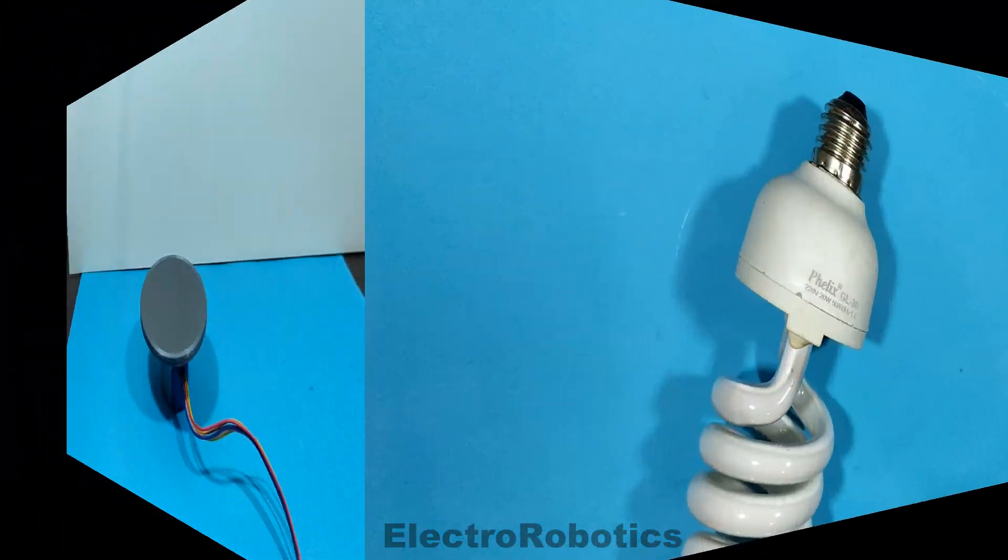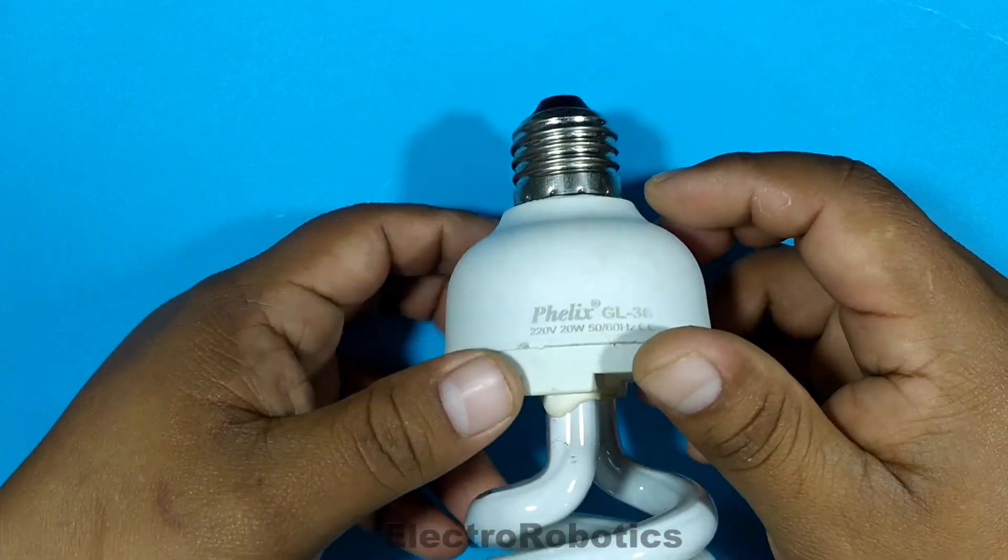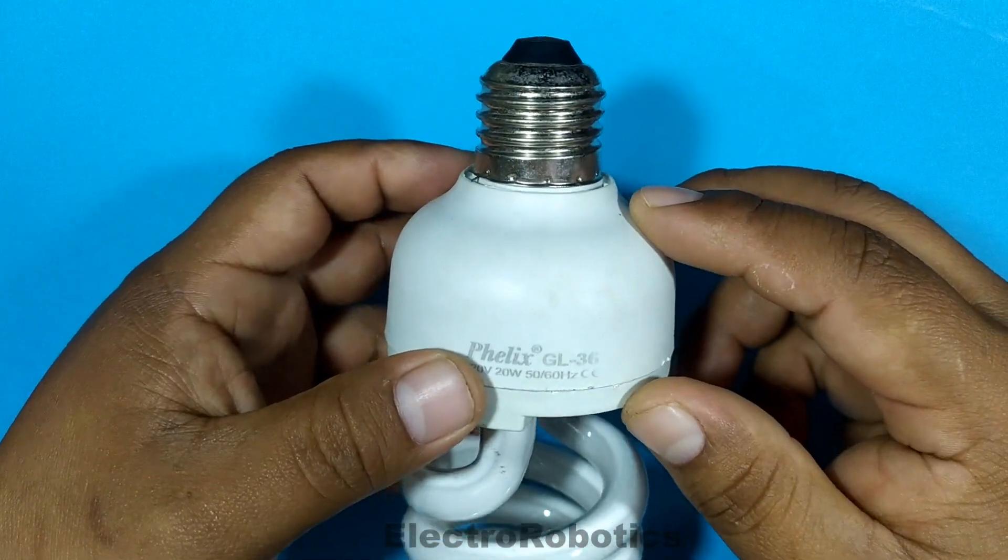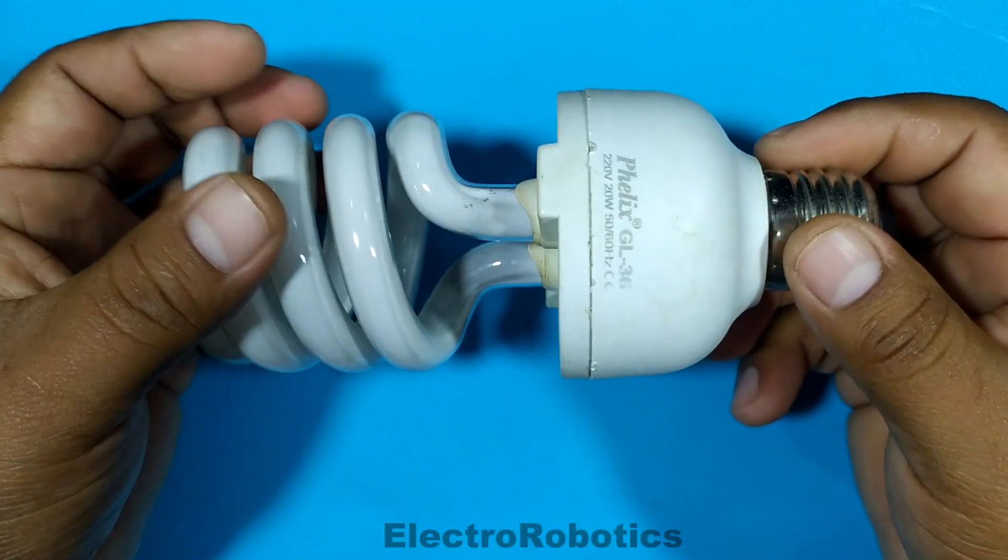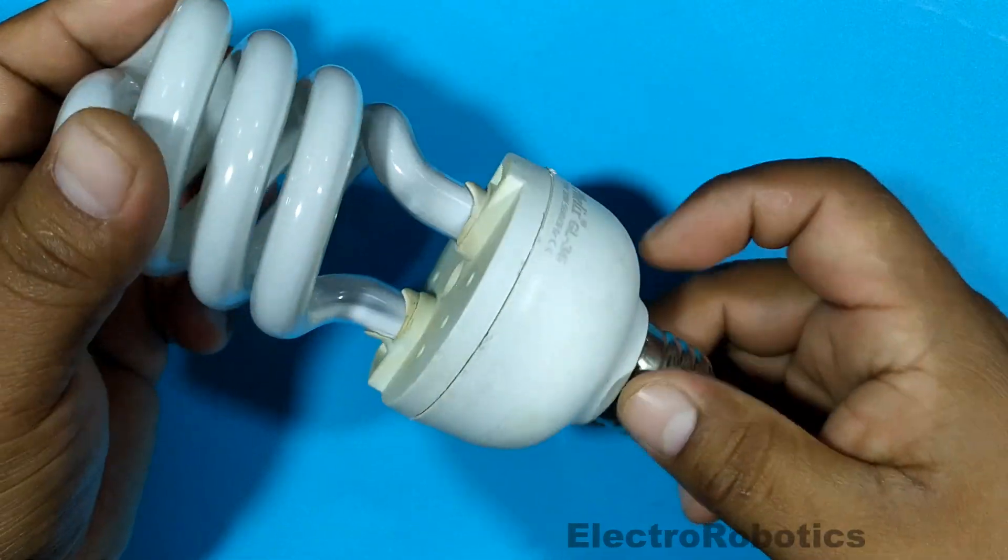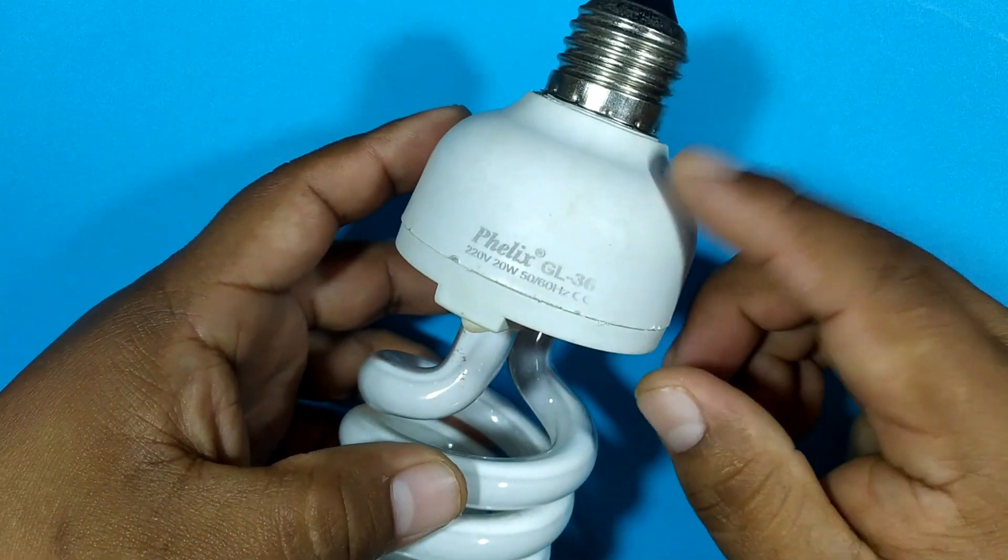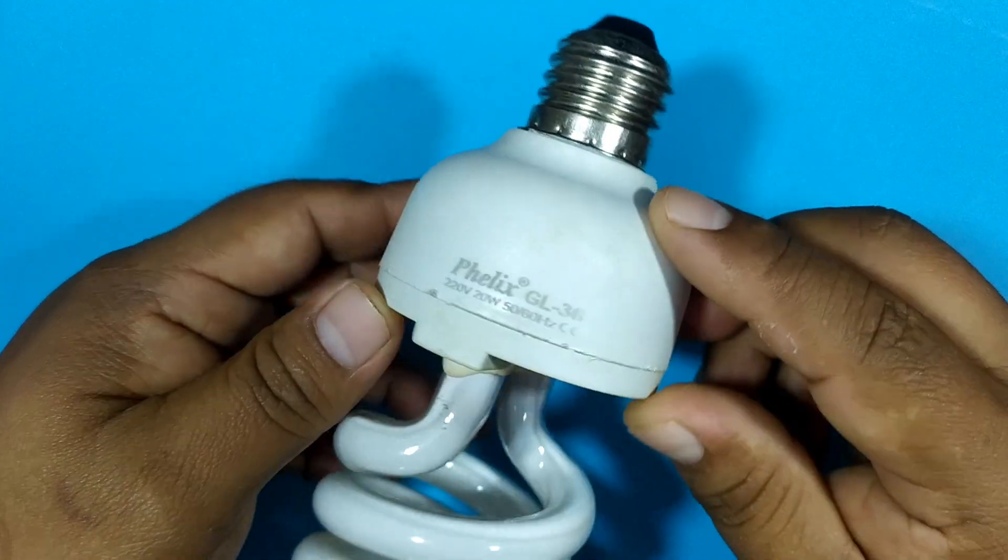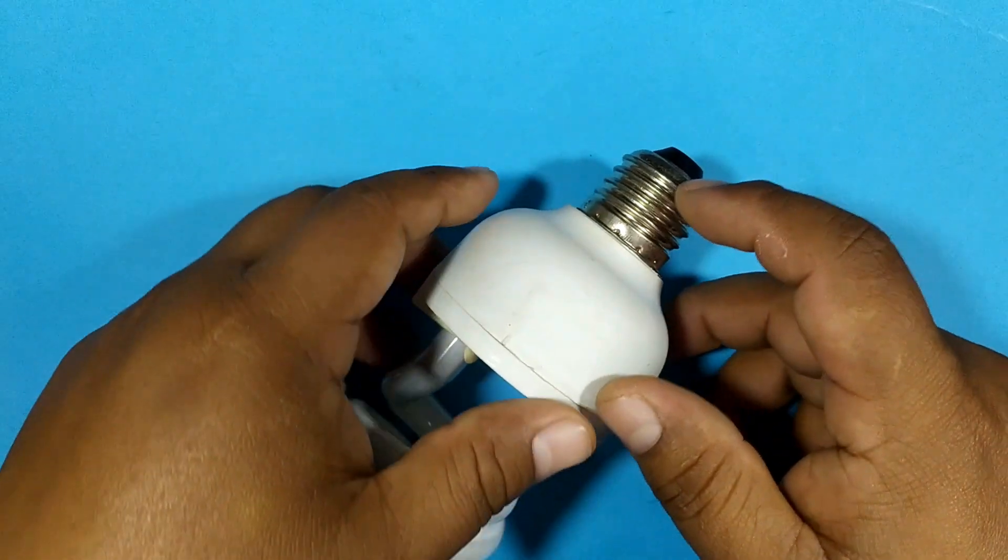To be able to make our electromagnetic lock, we need a fluorescent light bulb like this one. These bulbs have several electronic components inside, and among all these, it is the coil that interests us. The first thing we must do is remove the top cover.